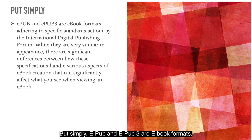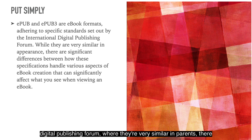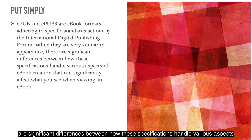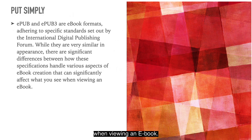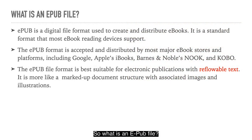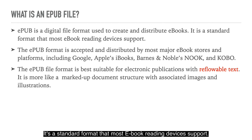Put simply, EPUB and EPUB3 are eBook formats adhering to specific standards set out by the International Digital Publishing Forum. Where they're very similar in appearance, there are significant differences between how these specifications handle various aspects of eBook creation that can significantly affect what you see when viewing an eBook. So what is an EPUB file? EPUB is a digital file format used to create and distribute eBooks — it's a standard format that most eBook reading devices support.